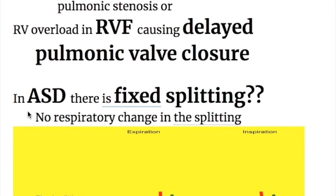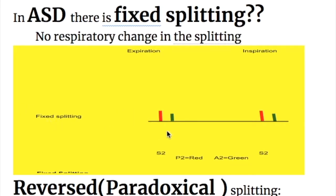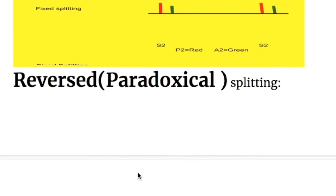In ASD, there is fixed splitting with no respiratory change in the splitting. It is the same fixed distance between the closures of the aortic and the pulmonary valves regardless of the respiratory cycle.